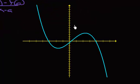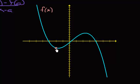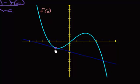So we have this graph right here — here's my f of x. I need a point P, so I'm going to choose about this one right here; this is going to be my point P. Let's say this is about negative two comma negative three, so that's my point P.